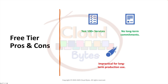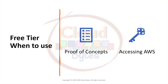The con of the free tier: it is impractical for long-term production use. You can test 100+ services with no long-term commitment, run a small hobby website, and learn how services work — but it should not be used for production workloads. If a production application runs beyond the free tier limit, you will be charged standard rates. When to use: POCs and learning about new AWS services.